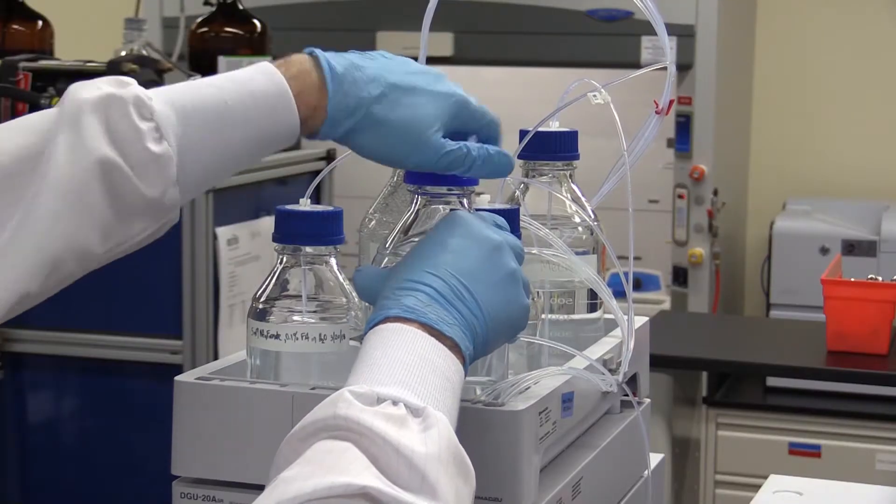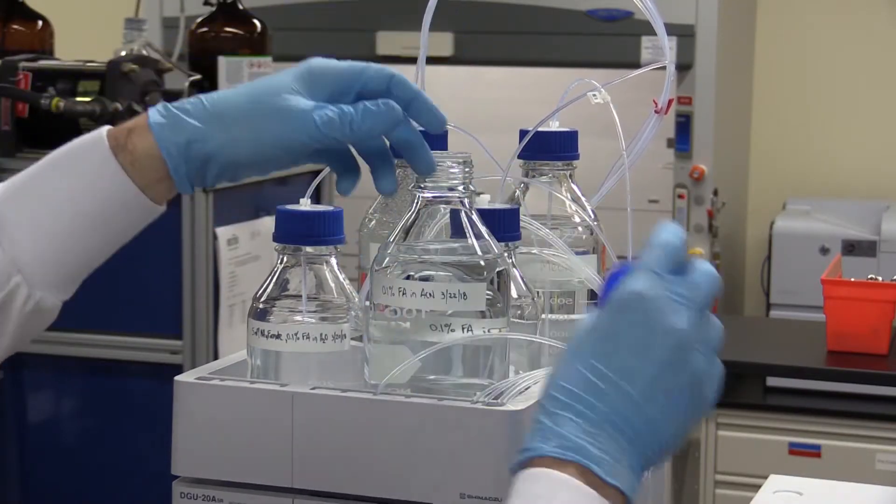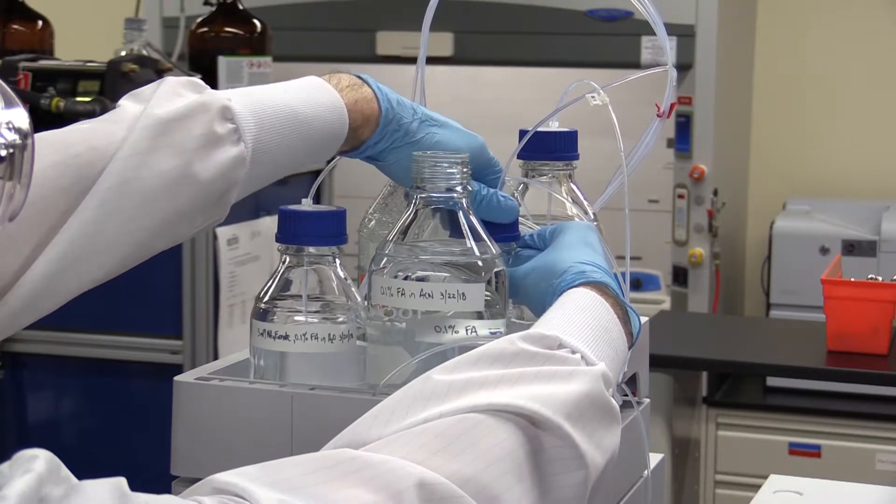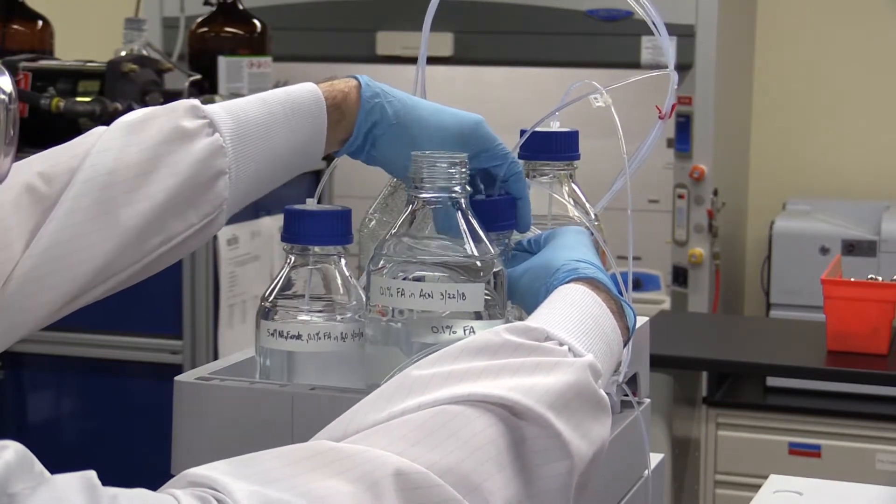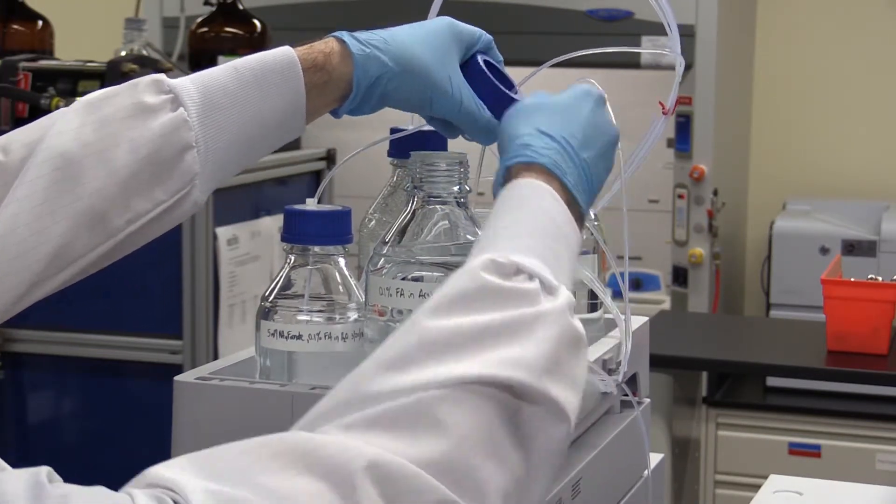So the best way to do this flushing is to prepare a mobile phase that matches the initial conditions of your run but without the additives. Flush this through the column for 10 to 20 column volumes.